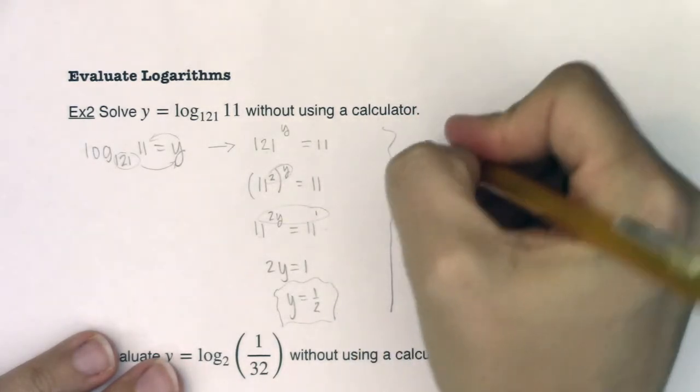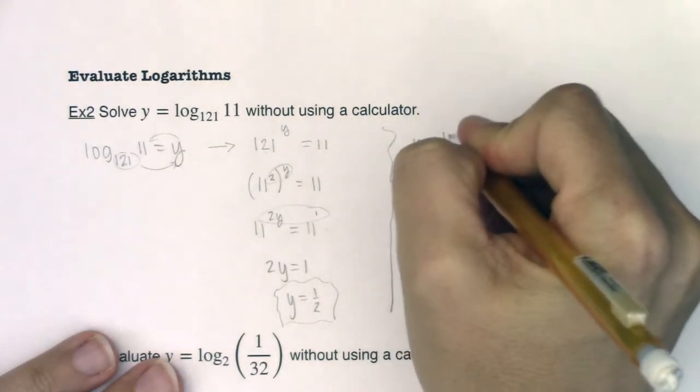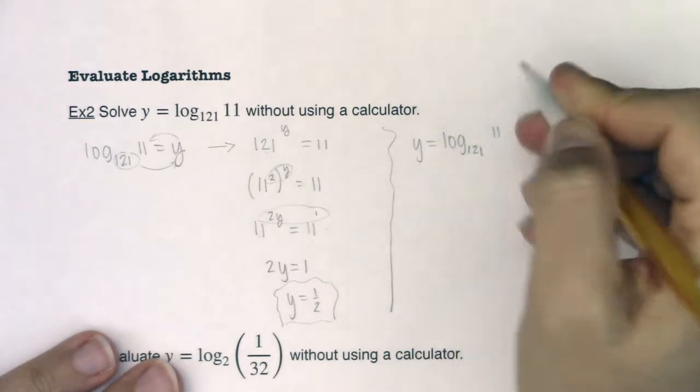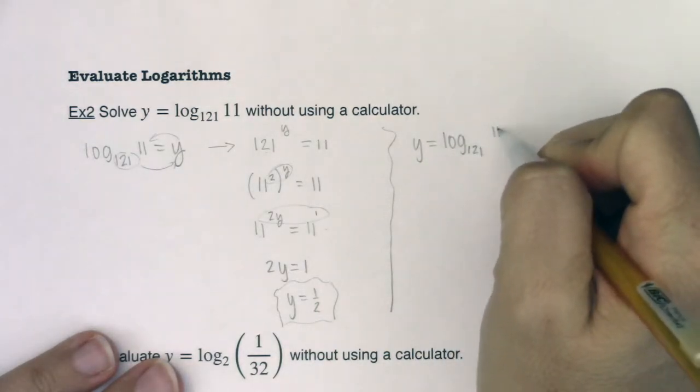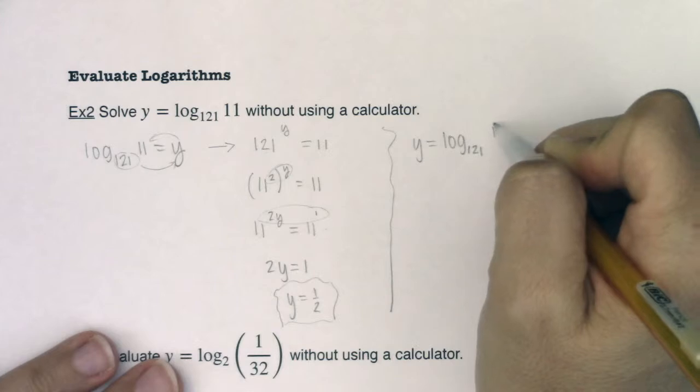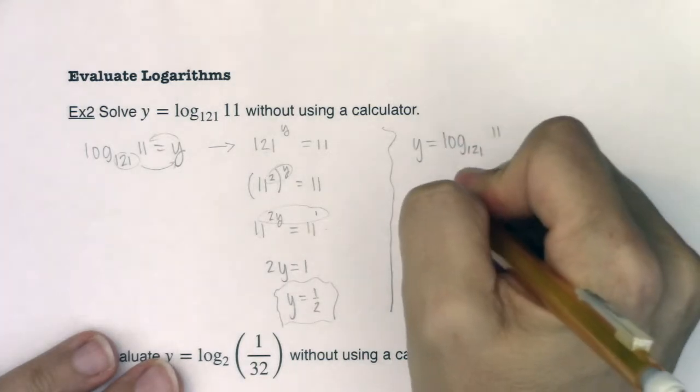All right, let me show you a different option. If I had y equaling log base 121 of 11, I would say, well, I do recognize that there's a relationship between 121 and 11. How could I rewrite 11 in terms of 121?